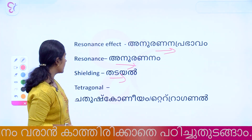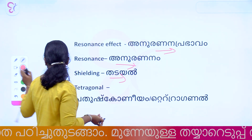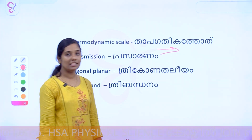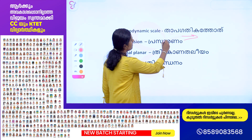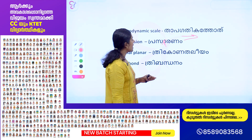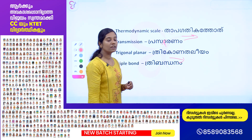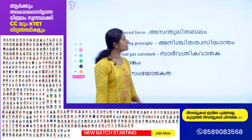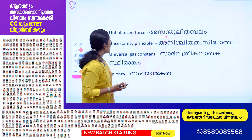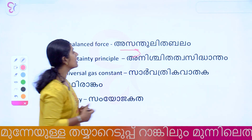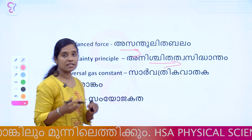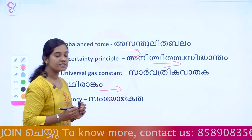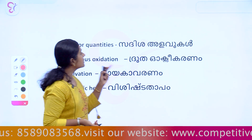Next is Tetragonal (Cathosconium), then Thermodynamic Scale, Trigonal Planar, Triple Bond, Unbalanced Force, and Heisenberg's Uncertainty Principle (Anachidatwa Siddhattham). Then Universal Gas Constant (Sarvathriga Vatagas Thirangam), Valency (Samyogadha), and Vector Quantity (Saddishya Alavukal).